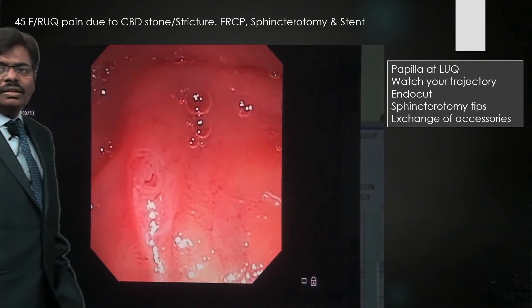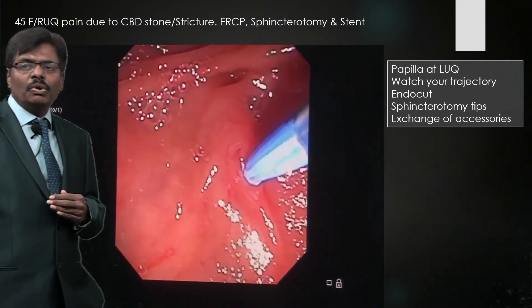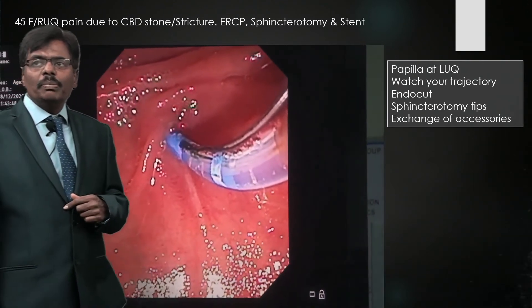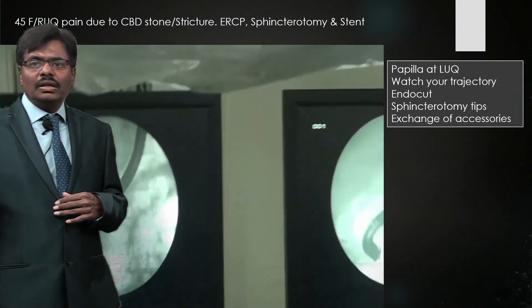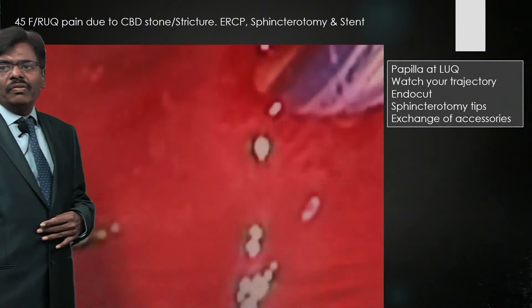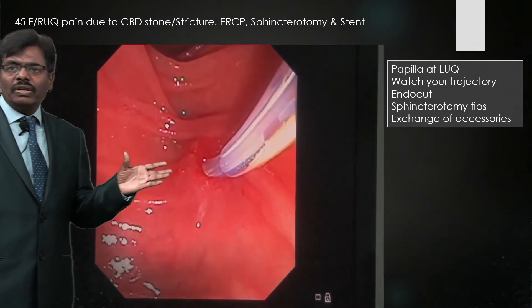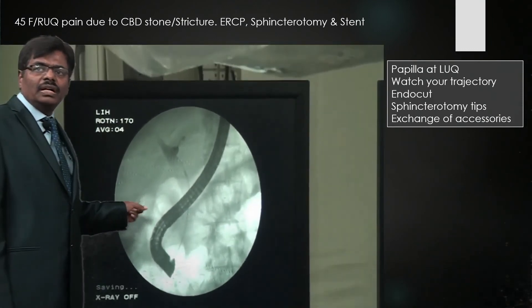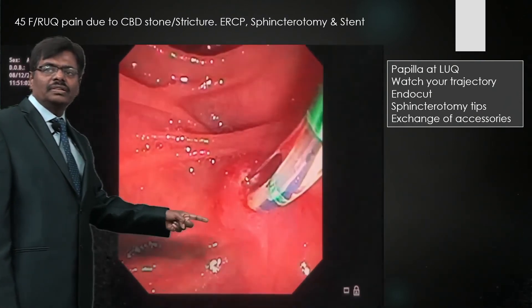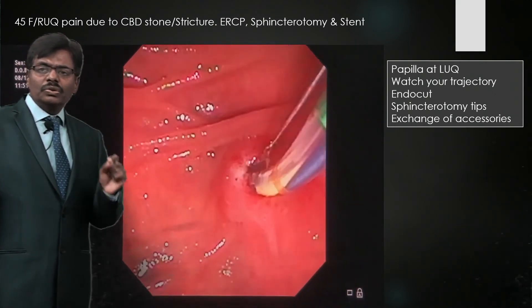Here for example, the ampulla is slightly low — I slowly maneuver until it is more at the center or left upper quadrant, then the trajectory is ideal. Watch my guide wire on the monitor — here it is nicely positioned. In this unedited video, the anesthetist is moving the camera between the endoscopy view and the C-arm, sorry for that. We have cannulated, injected contrast, and you can see the guidewire inside with a dilated duct visible on fluoroscopy.